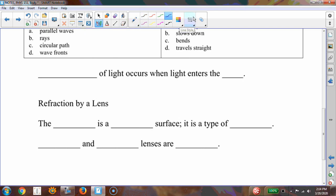So, as we saw in the previous session, the bending of light occurs when light enters the medium at an angle.